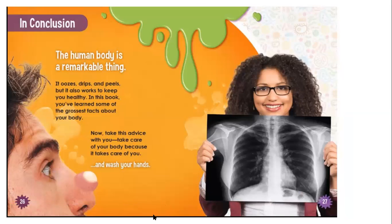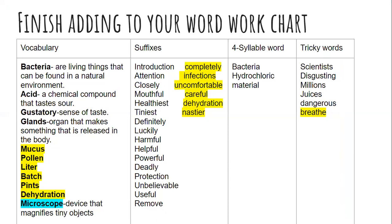So our human body is really an amazing thing. As you're reading these last few pages of our text, finish adding to your word work chart. The highlighted words in yellow are the ones we added last time — some new vocabulary words, some words with suffixes: completely, infections, uncomfortable, careful, dehydration, nastier. And we had a tricky word: breathe. If you don't have these words in your word work chart, take a minute to write them down.